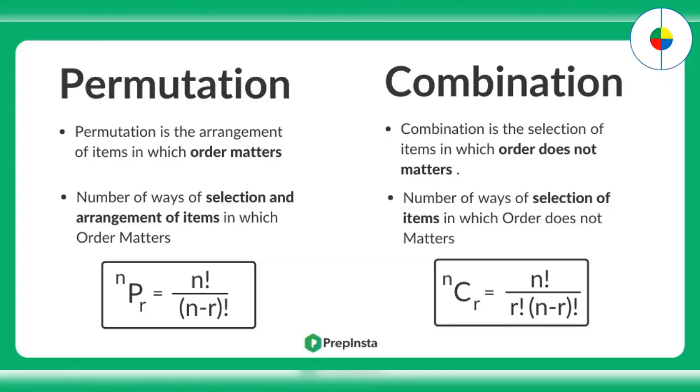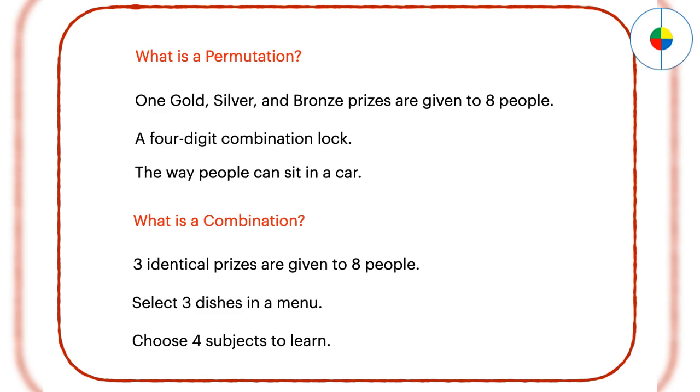What are permutation and combination? The term permutation refers to a mathematical calculation of the number of ways a particular set can be arranged. Repetition can be allowed, or there is no repetition allowed.